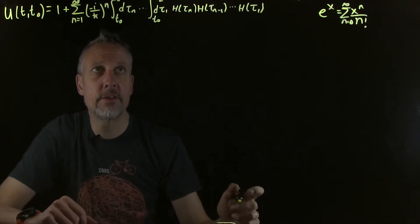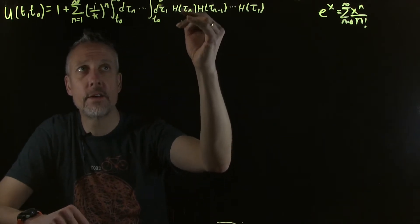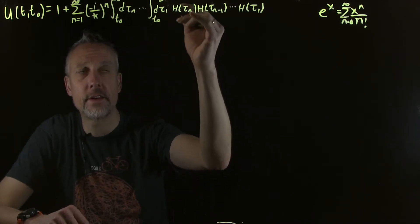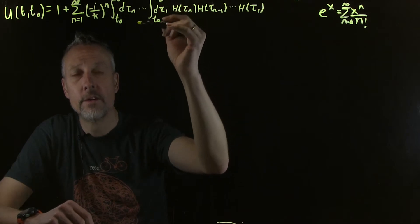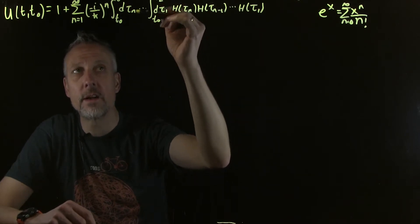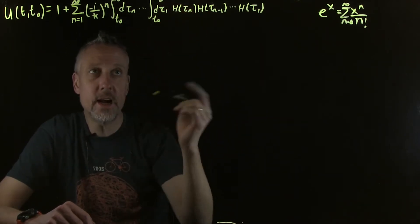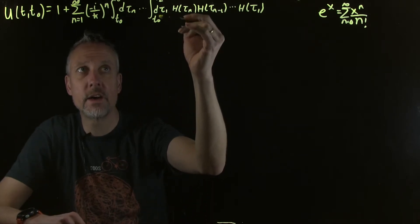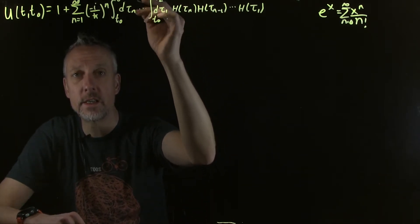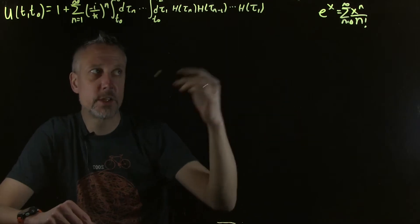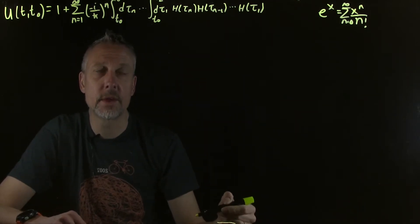There are two things to see. First is how these limits work. Notice it's t₀ to t to τ₂. The next one would be from t₀ up to τ₃ and so on, which is not the same thing as going from t₀ to t, t₀ to t, t₀ to t — which is what you would need if you wanted to call it an exponential.